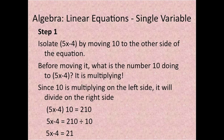Step 1: Isolate 5x minus 4, which is what's in the parentheses, by moving 10 to the other side of the equation. Before moving it, what is the number 10 doing to 5x minus 4? It is multiplying. Since 10 is multiplying on the left side, it will divide on the right side. So 5x minus 4 times 10 equals 210. 5x minus 4 equals 210 divided by 10. 5x minus 4 equals 21.